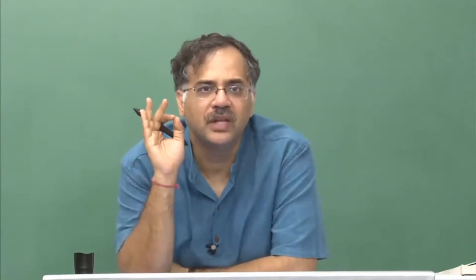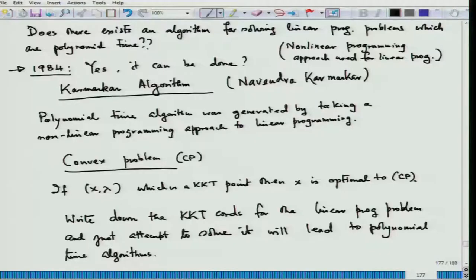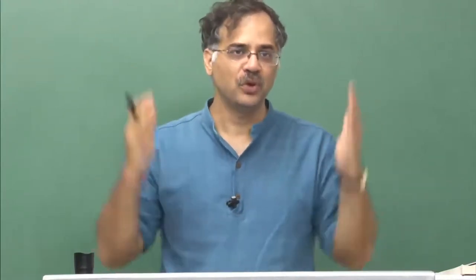The approach we are going to deal with here comes out of a very simple fact that we have already studied. We know that the Karush-Kuhn-Tucker conditions for convex optimization problems are not only necessary but also sufficient. So if you know there is a feasible x and a Lagrange multiplier lambda which gives you a KKT point, then x is an optimal solution. The interesting fact is that once you write down the KKT conditions for the linear programming problem and try to solve them, you get an interior point method which is polynomial time.